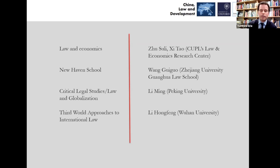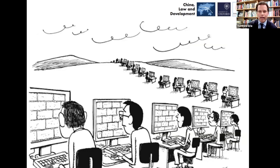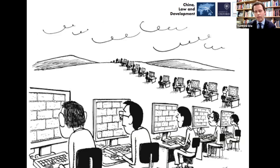The problem seems to be double firewalls: between Anglophone scholarship and Chinese scholarship on the one hand, and between domestic law scholars and international law scholars on the other. Some Chinese may go abroad to obtain a PhD in economics, political science, sociology, or anthropology, but there may be an opportunity cost — the job market may not value those degrees, and the publication system may not reward the years it takes to collect, compile, and analyze data in a rigorous empirical fashion.